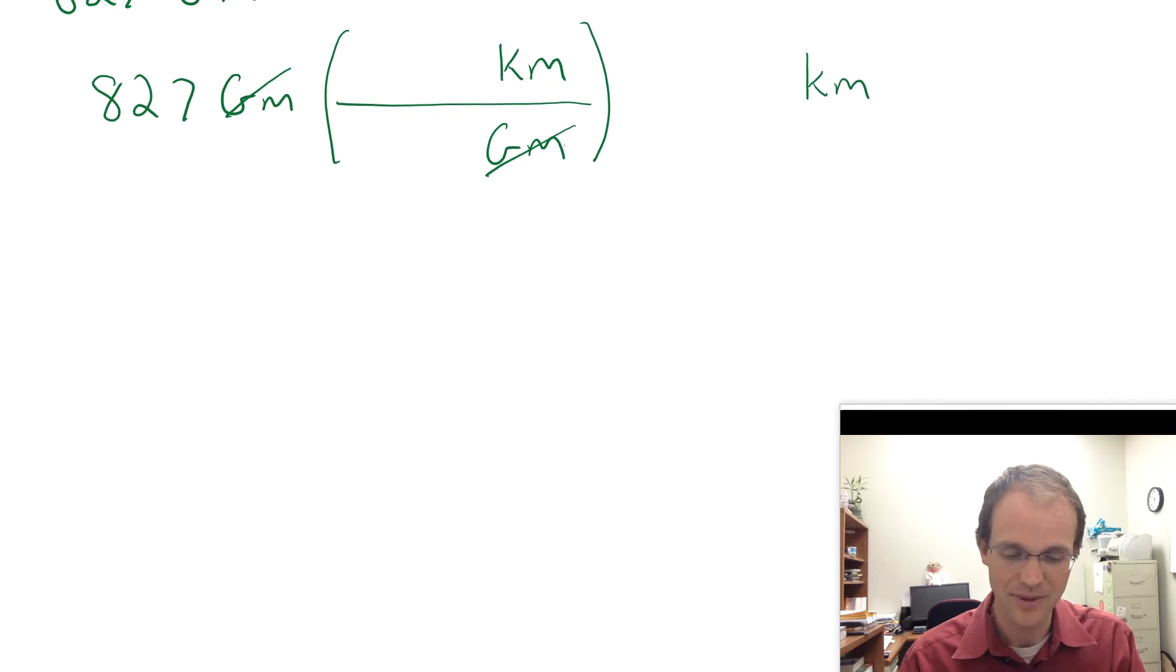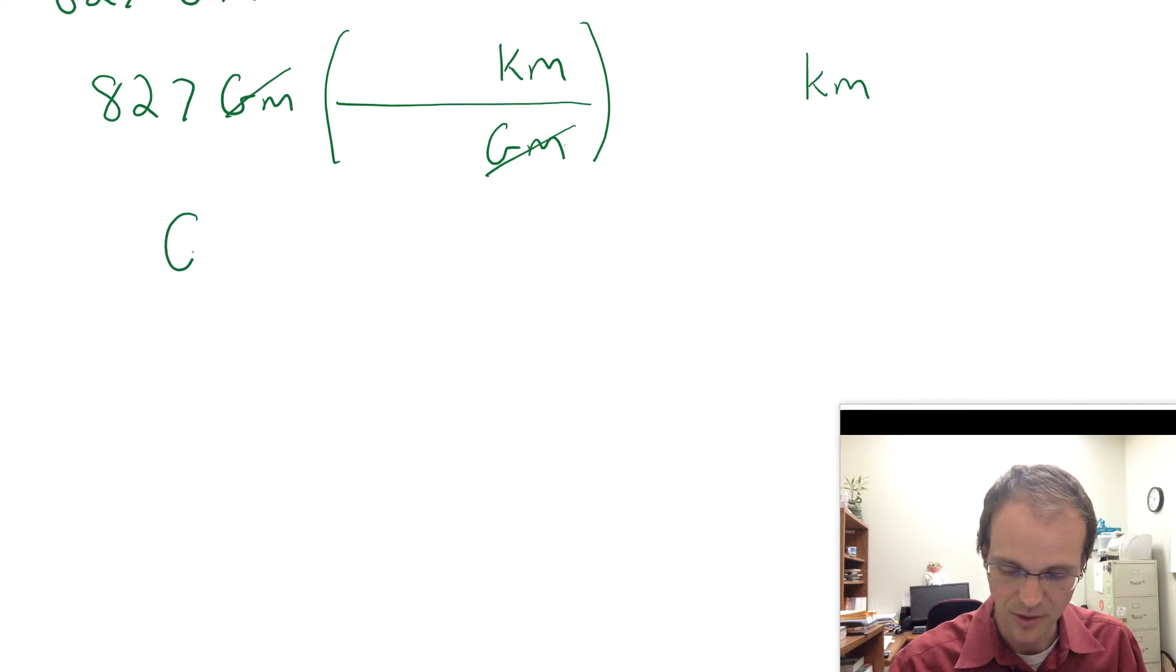And so I look at that and I say, well, that's not going to work, so I need a plan. What do I know how to do with gigameters? Well, I know how to convert that to meters. And then meters, I know how to convert to kilometers. So I'm going to do a two-step plan where I first convert gigameters to meters and then I convert meters to kilometers. So I've got my 827 gigameters here.